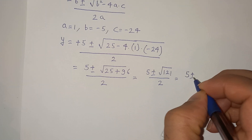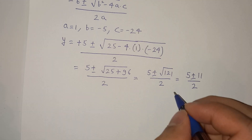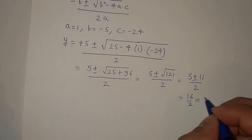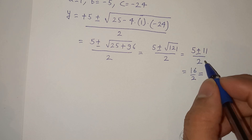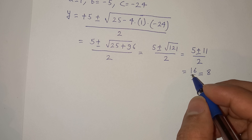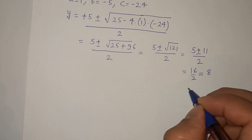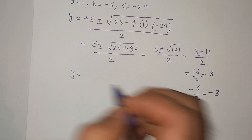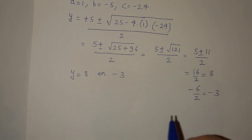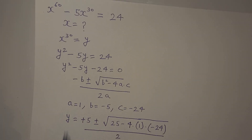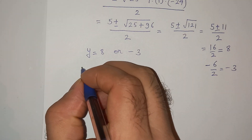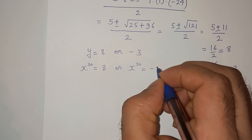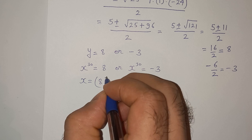So 5 plus-minus root 121 is 11, divided by 2. That gives us 5 plus 11 equals 16 divided by 2, so one answer is 8. The other is 5 minus 11 which is minus 6 divided by 2, equals to minus 3. So the value of y is 8 or minus 3. Since we assumed y as x power 30, we have x power 30 equals to 8 or x power 30 equals to minus 3.